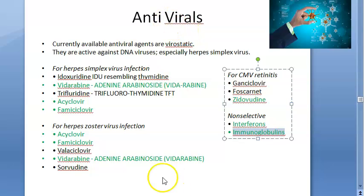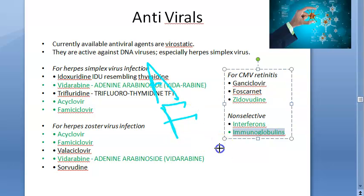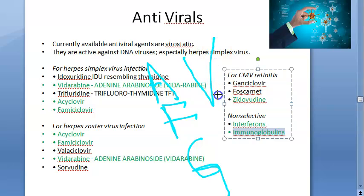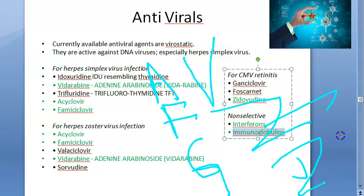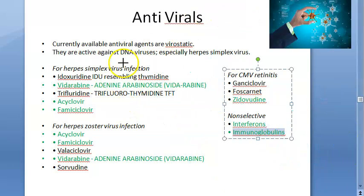So to recap the key antiviral names to remember: acyclovir, famciclovir, ganciclovir, vidarabine, zidovudine, interferons, and immunoglobulins. Additionally, you can remember idoxuridine (IDU) and trifluridine, though these are less preferred.